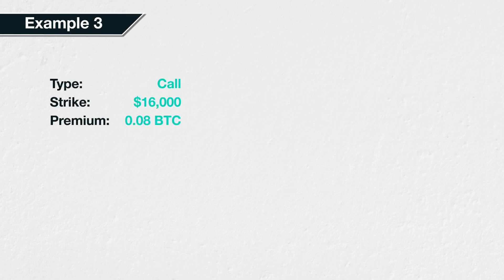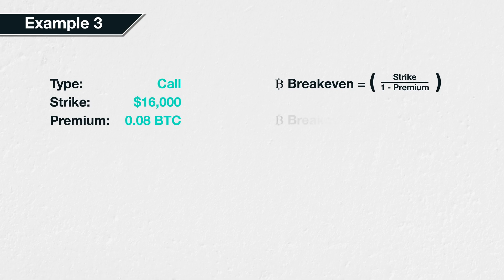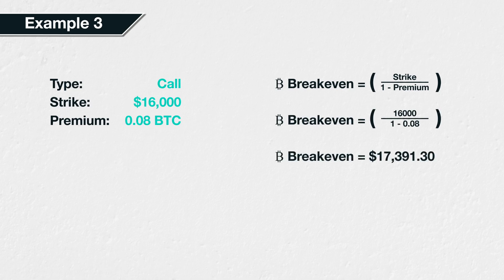Example 3. Suppose we sell a Bitcoin call option with a strike price of $16,000 and we collect a premium of 0.08 BTC for it. The breakeven is calculated in the same way: strike price divided by one minus premium, which is $16,000 divided by one minus 0.08. This gives us a breakeven point of $17,391.30, which means if the Bitcoin price is $17,391.30 when the option expires, the trade will have broken even, leaving your Bitcoin balance the same as it was before the trade.